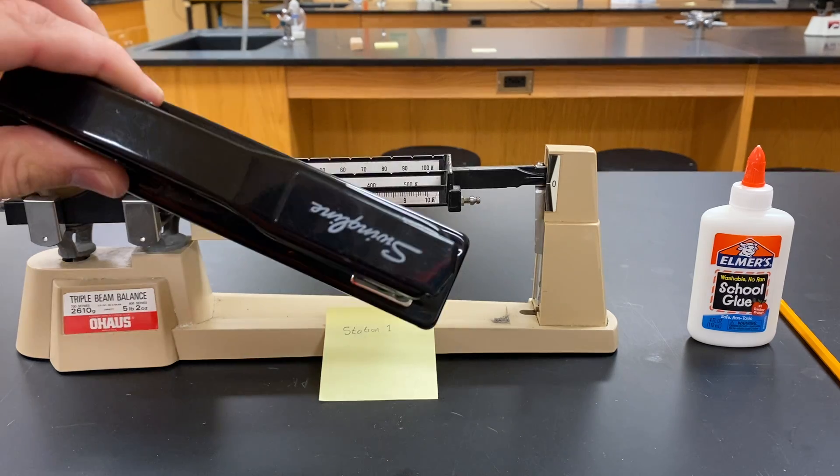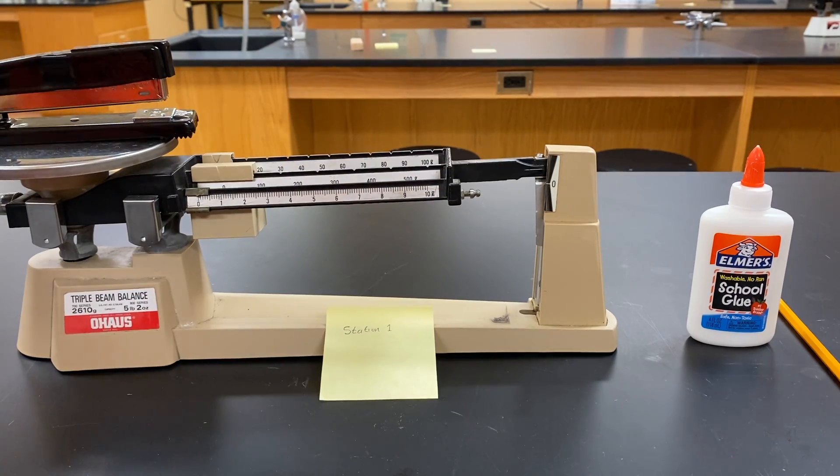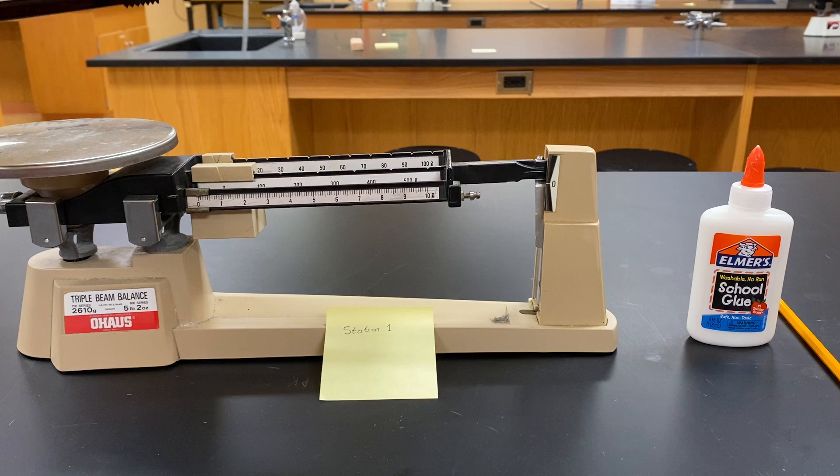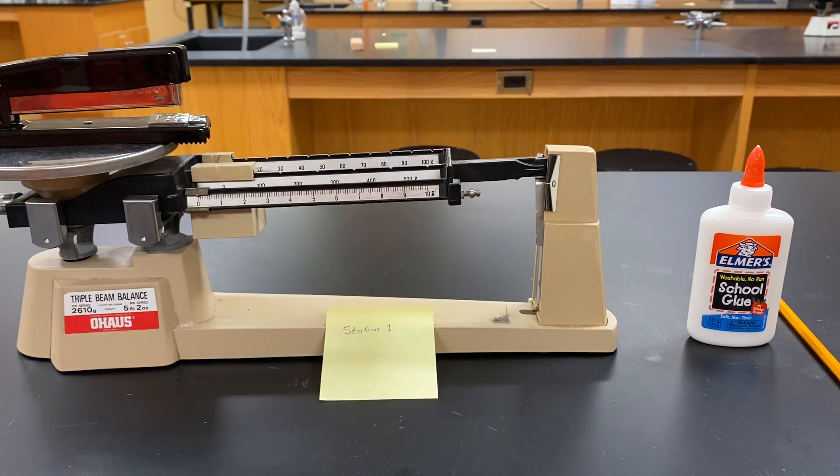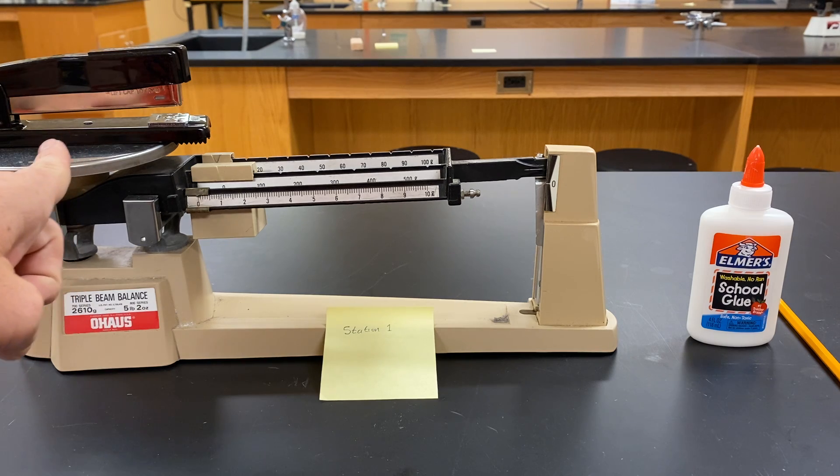Here we have our Swingline stapler. We'll set it right here on the circular pad so that we can take the weight of it. As you'll notice now, the pad makes the triple beam bar go up, which means there's too much weight over here.